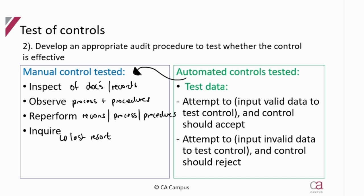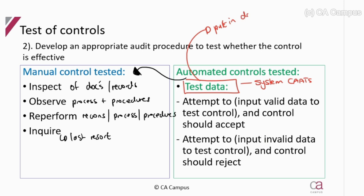However, some automated controls cannot be tested using manual procedures. Those controls must be tested using test data, also referred to as a system CAT. The English definition of test data is simply: input data into the computer information system to see that the control works or does not work.